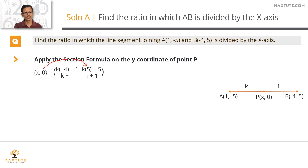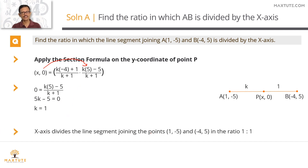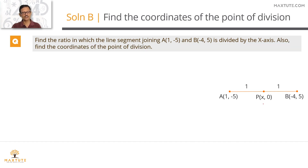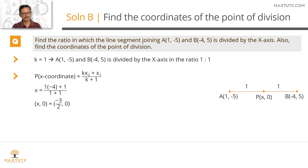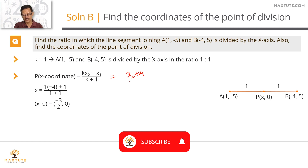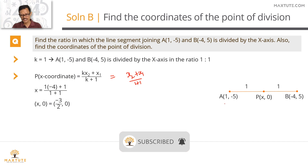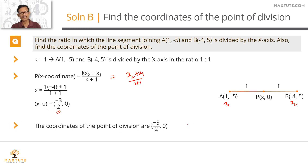To summarize: we apply the section formula on the y-coordinate of point P, which equals zero, to compute k. We get 5k - 5 = 0, giving k = 1. The ratio in which the x-axis divides the line segment is 1 is to 1. Using k = 1 in the section formula for the x-coordinate gives (-4 + 1) / 2 = -3/2. The coordinates of the point where the x-axis meets the line are (-3/2, 0).